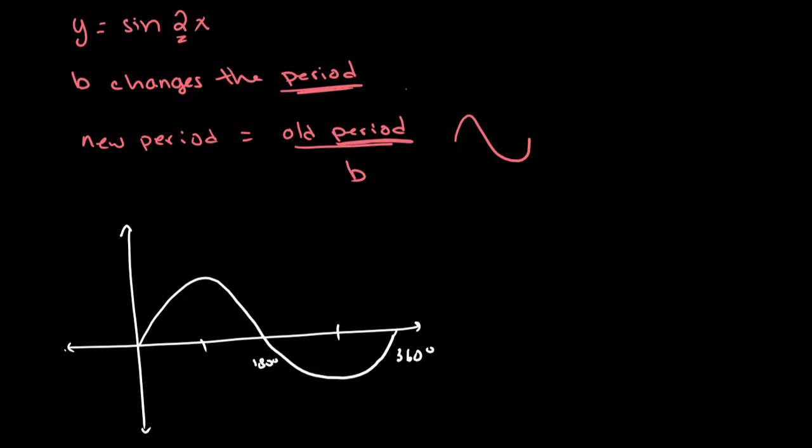So the period of sine is 360 degrees. So our new period is going to be equal to, so period equals 360 over our value of b, and our value of b happens to be 2. So our period is 360 over 2, which is equal to 180 degrees. So our sine curve will repeat itself every 180 degrees. So what does that mean?